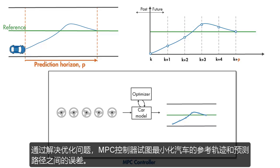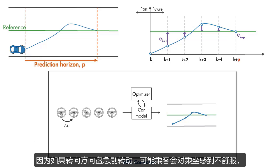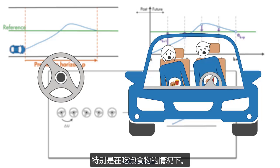By solving an online optimization problem, the MPC controller tries to minimize the error between the reference and predicted path of the car. It also tries to minimize the change in the steering wheel angle from one time step to the next. Because if the steering wheel is turned sharply, the ride may become uncomfortable for the passengers, especially if their stomachs are full.